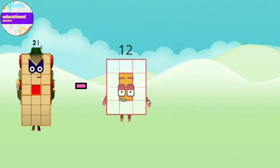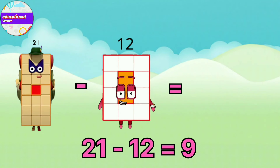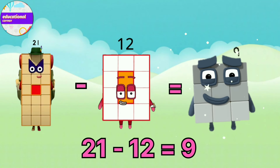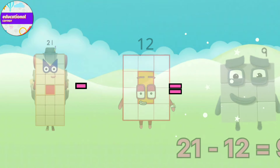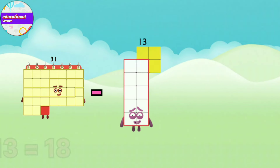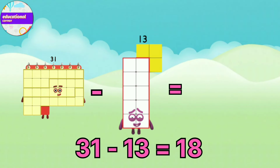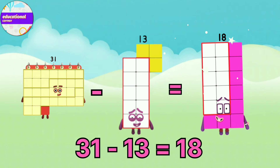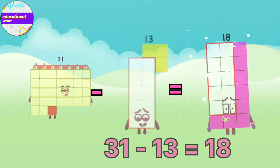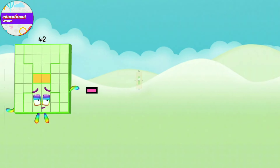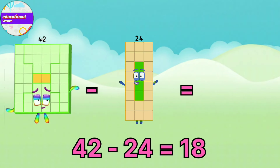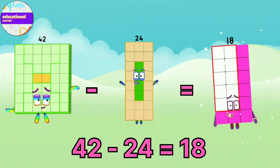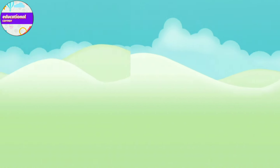21 minus 12 equals 9. 31 minus 13 equals 18. 42 minus 24 equals 18.